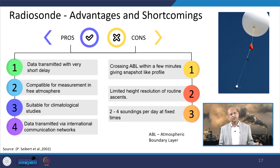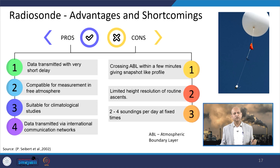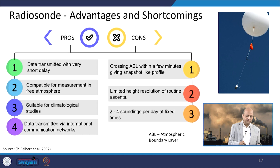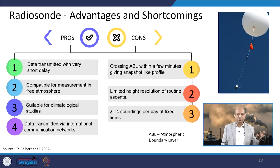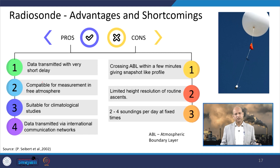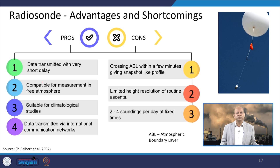Advantages and shortcomings of different methods exist. For radiosonde: data are transmitted with very short delay, it is compatible for measurement in the free atmosphere, suitable for climatological studies, and data can be transmitted via international communication networks. However, limitations include only 2 to 4 soundings per day, limited height resolution, and a snapshot-style profile as the balloon crosses the atmospheric boundary layer within a few minutes.